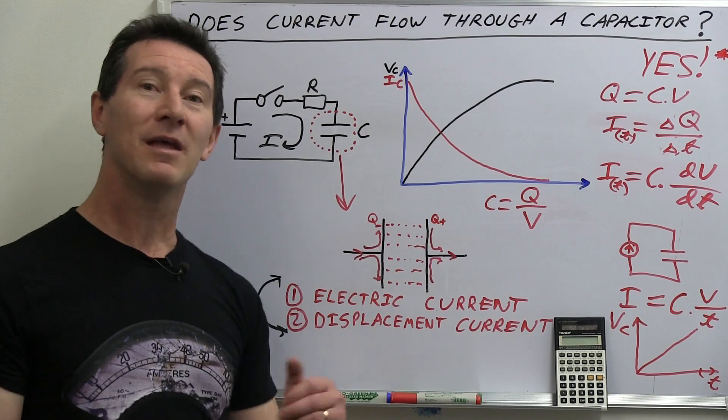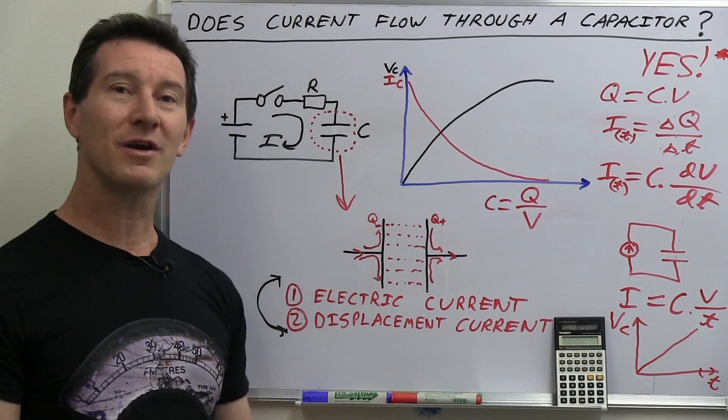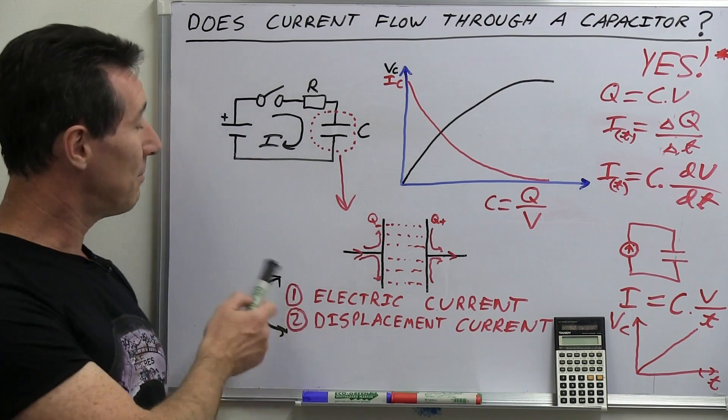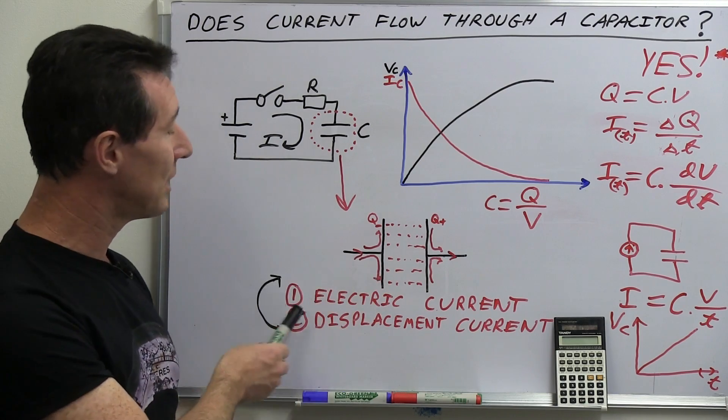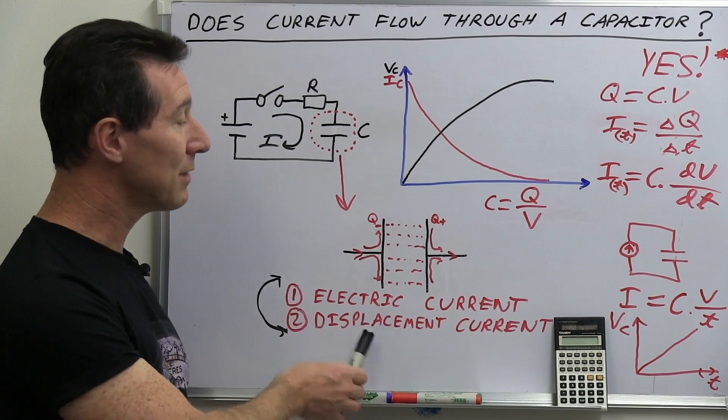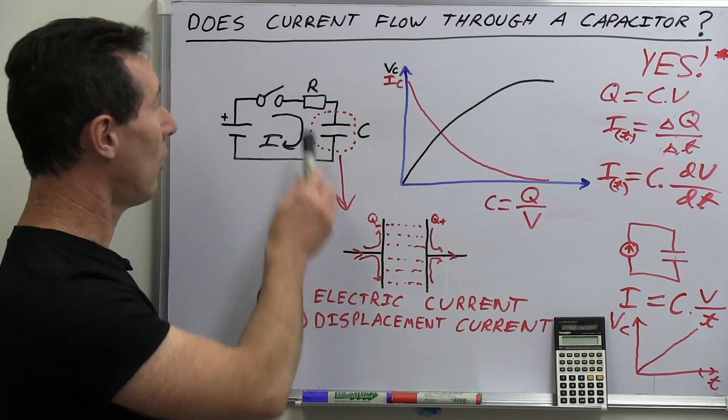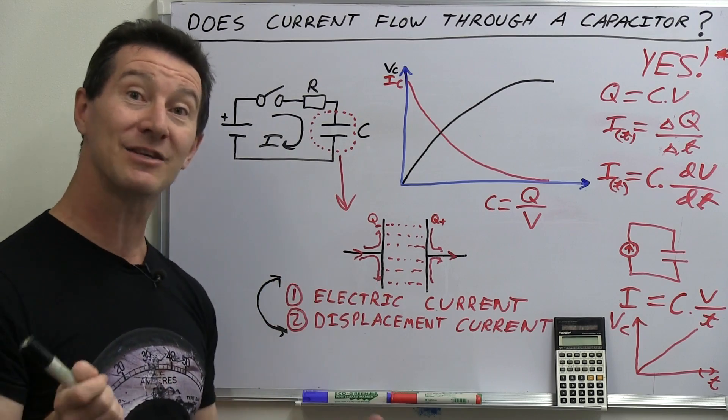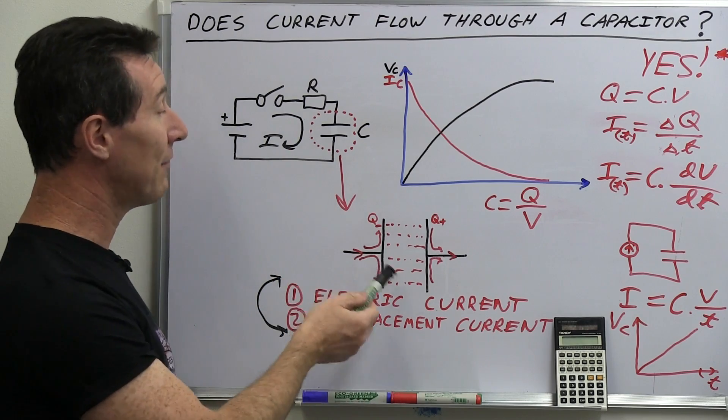But as I said, in practical electronics, yes, current flows through a capacitor. And when you use the word current, it means it implies the combination of electric current and displacement current, i.e. the flow of actual electrons or electric charge through a conductor.